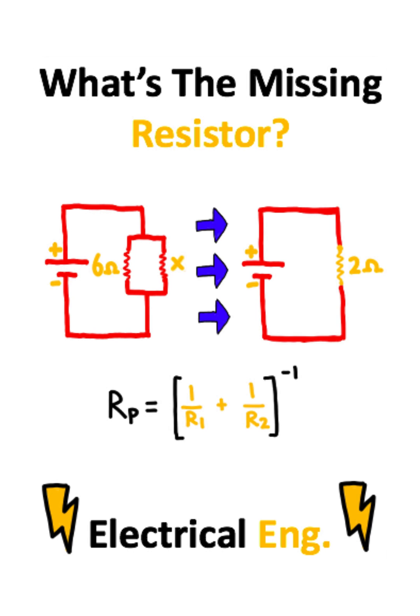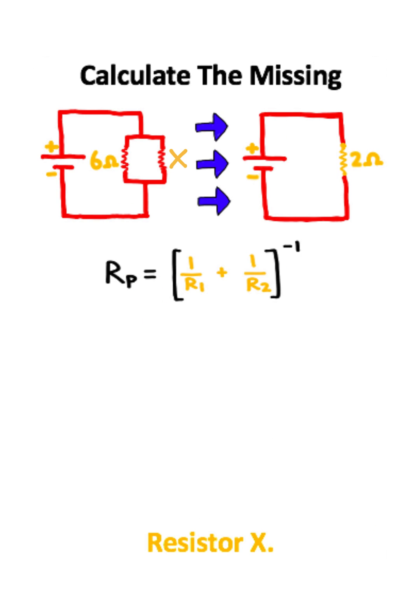I believe anyone watching this video can solve this circuit. So here we have a circuit with a 6 ohm resistor and an unknown resistor that are parallel to each other. These two resistors combined into a 2 ohm resistor. How can we calculate the missing unknown resistor?